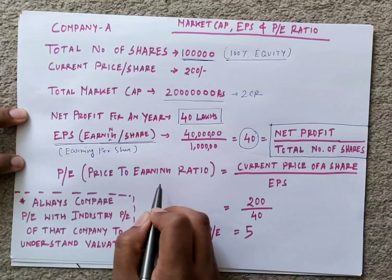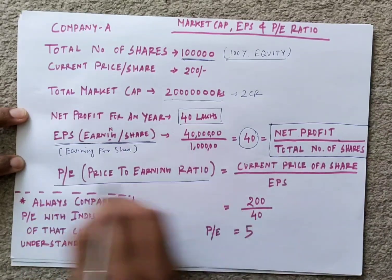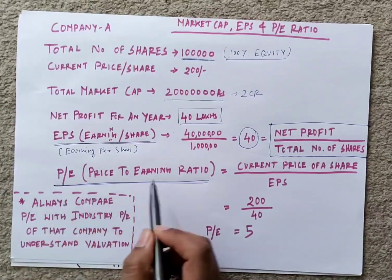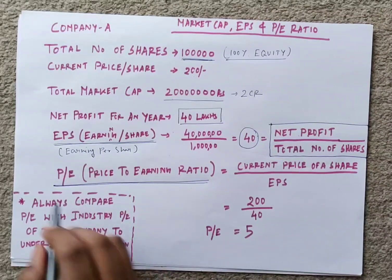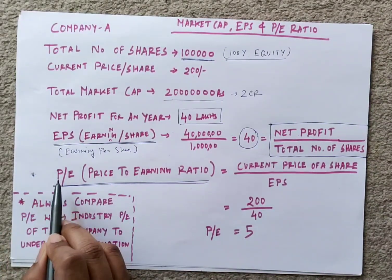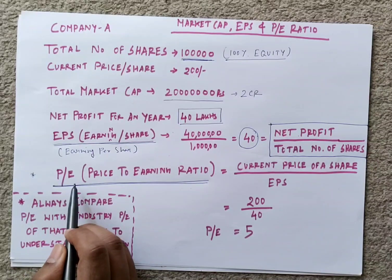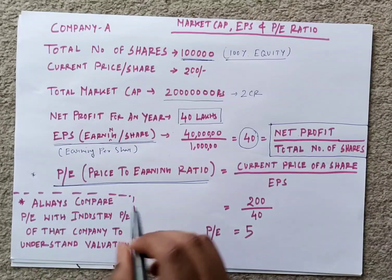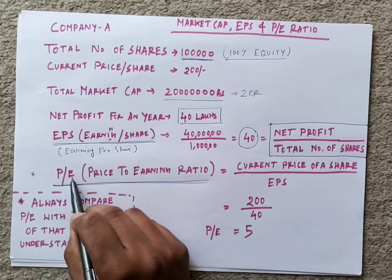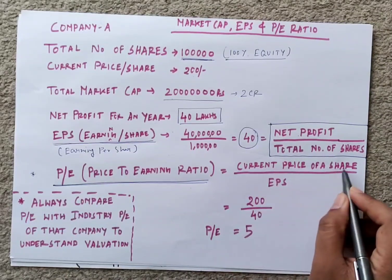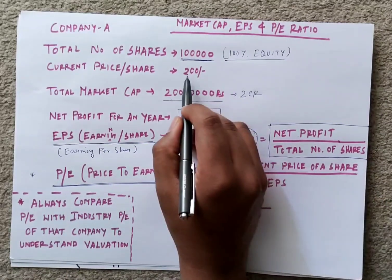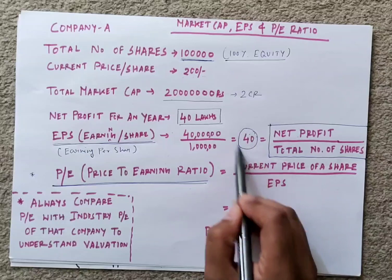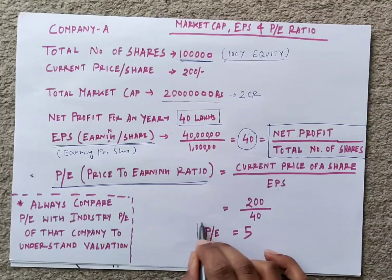Now we will understand what is Price-to-Earnings ratio, or PE ratio. This is very important — we use PE ratio to understand the valuation of a company. However, it is not the only parameter we consider for valuation, but it is important to check PE before investing. PE is the current price of a share divided by the earnings per share. So here, current price is 200 rupees divided by EPS of 40, giving a PE of 5.